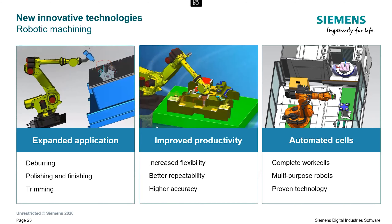SimSolid is a revolution. It uses the original geometry as it is. SimSolid is faster than traditional CAE software. Geometry preparation and meshing are the two most time-consuming and expertise-intensive tasks performed in traditional finite element analysis. SimSolid eliminates geometry cleanup and meshing and starts directly from generating connections in the simulation.